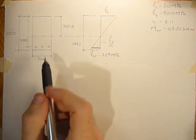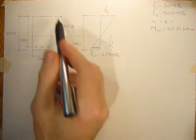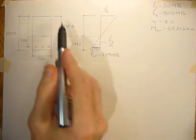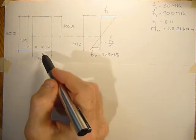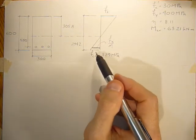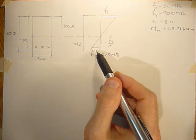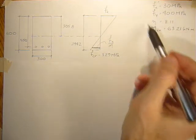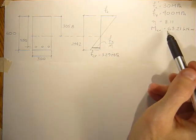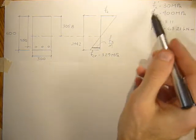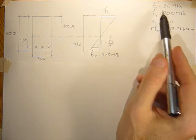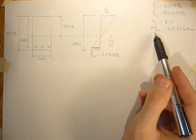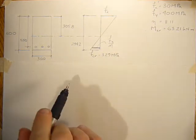So I've just redrawn the section geometry, the stress diagram, and some of the key properties: the 28-day compressive stress, yield stress, modular ratio, and cracking moment.